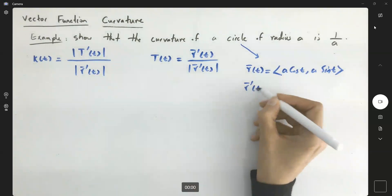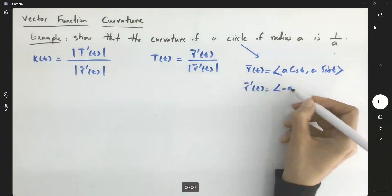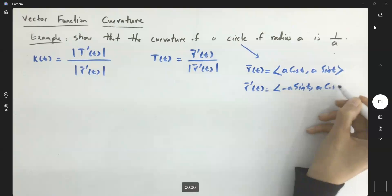Well, now you can easily compute the derivative, which is negative A sine T and A cosine T.